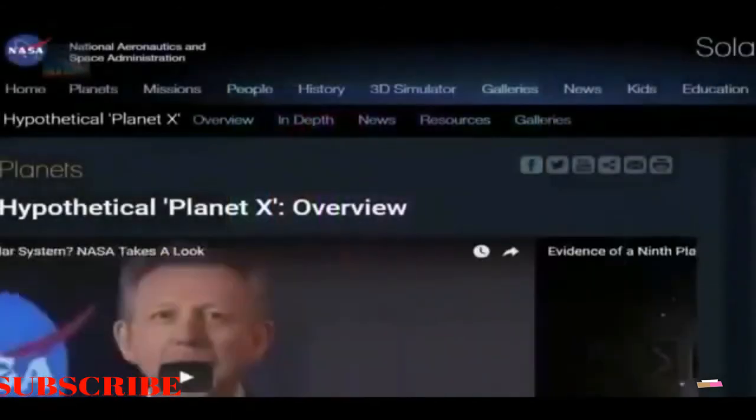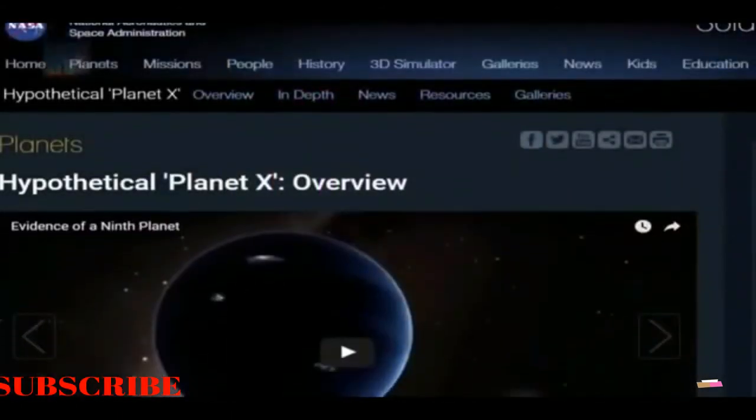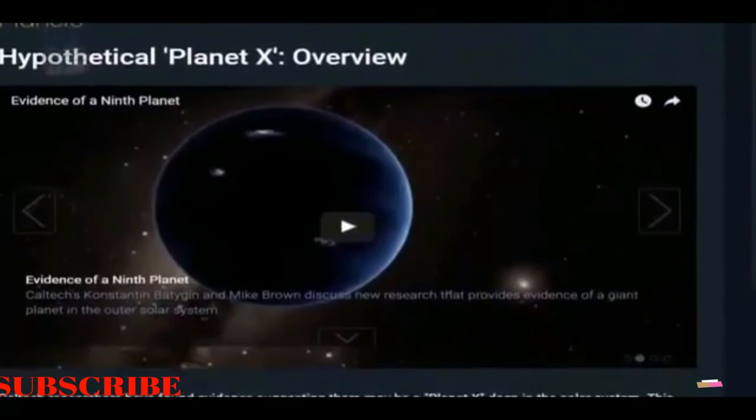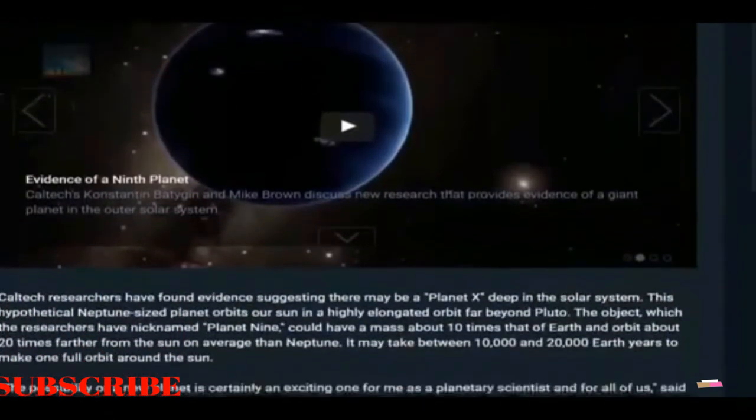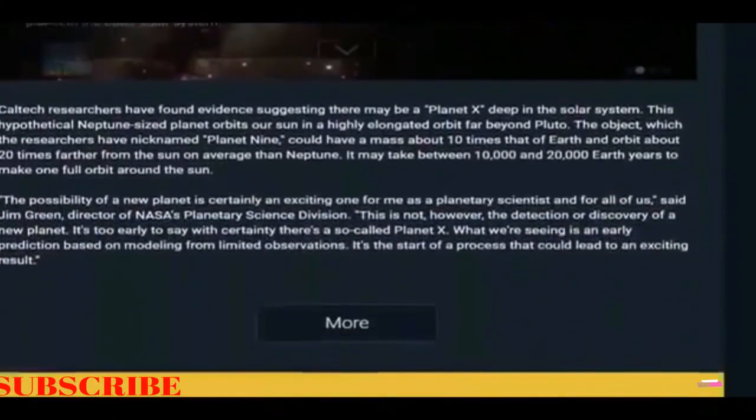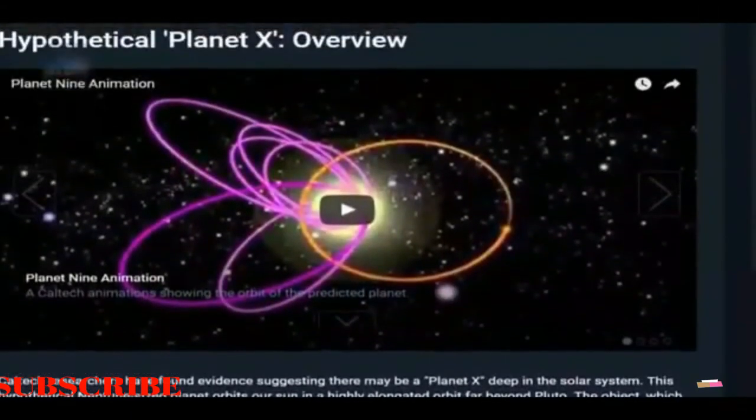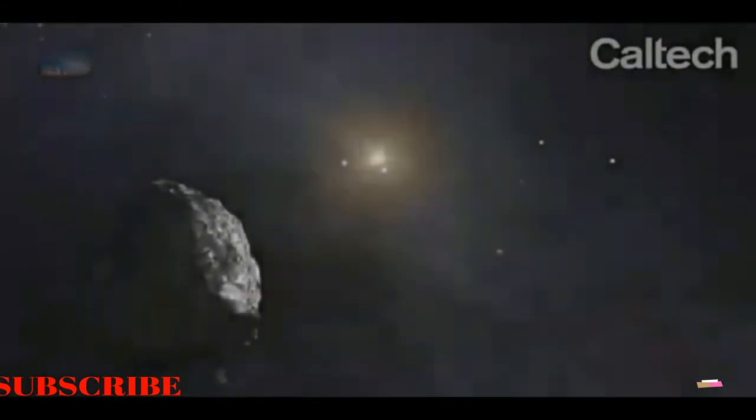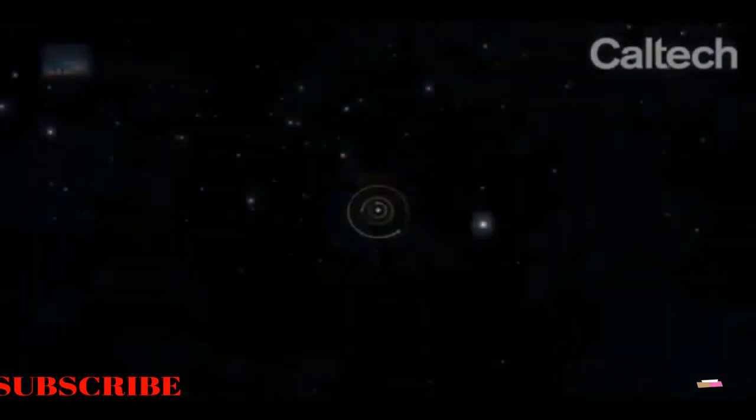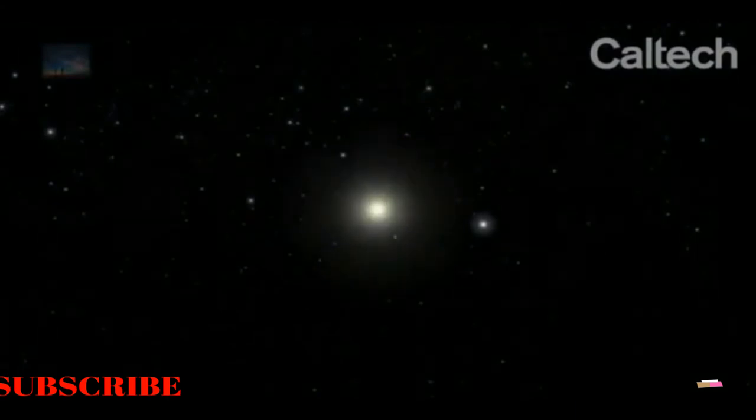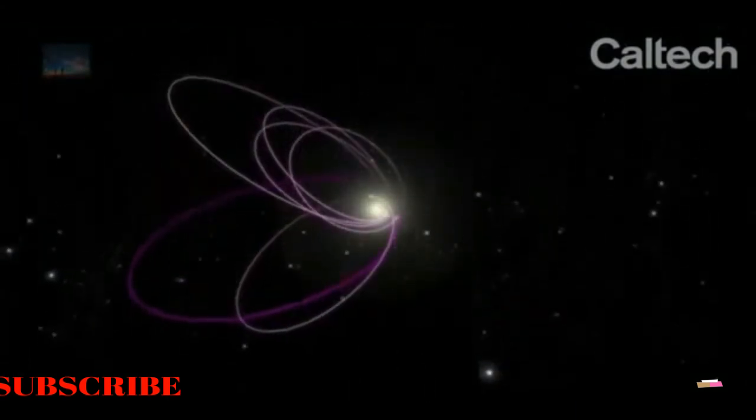And finally, number one on our list, Planet Nine, Speck of Light Observed. In January of 2016, researchers at Caltech stunned the world by announcing the discovery of Planet Nine. A speck of light was observed and astronomers and stargazers around the world are waiting in anticipation for more confirmation. Though the NASA researchers are stressing that this is only a speck of light that has been observed, they can confirm that they are on the verge of discovering the planet.